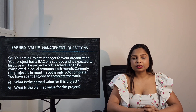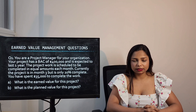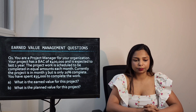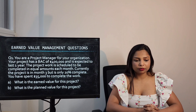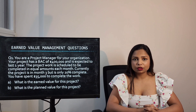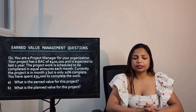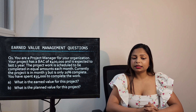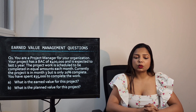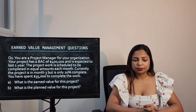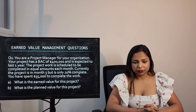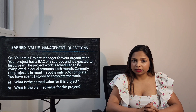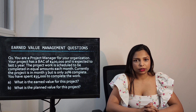Now let's try to solve some questions based on the Earned Value Management terms and formulas. Question 1: You are a project manager for your organization. Your project has a BAC of $400,000 and is expected to last one year. The project work is scheduled to be completed in equal amounts each month. Currently the project is in month 3 but is only 20% complete. You have spent $35,000. Calculate the Earned Value and the Planned Value for this project.